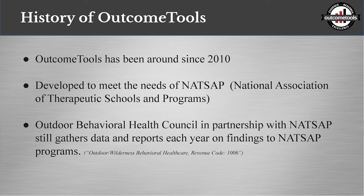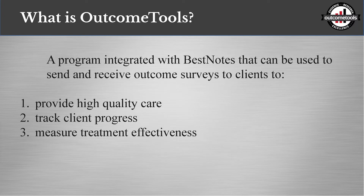The history of Outcome Tools: it has been around since 2010. It was developed to meet the needs of the National Association of Therapeutic Schools and Programs. That association, in conjunction with the Outdoor Behavioral Health Council, wanted to answer the question of whether wilderness therapy is effective and how to show that effectiveness. They came up with a process using OQ measures tools and different series of time frames. With that, they gathered data and presented it to insurance billing companies so that they can now get reimbursed with a revenue code — you'll see that listed on the slide. That's a little bit of the power that outcomes can provide: proving to your payers the effectiveness of the treatment you're delivering.